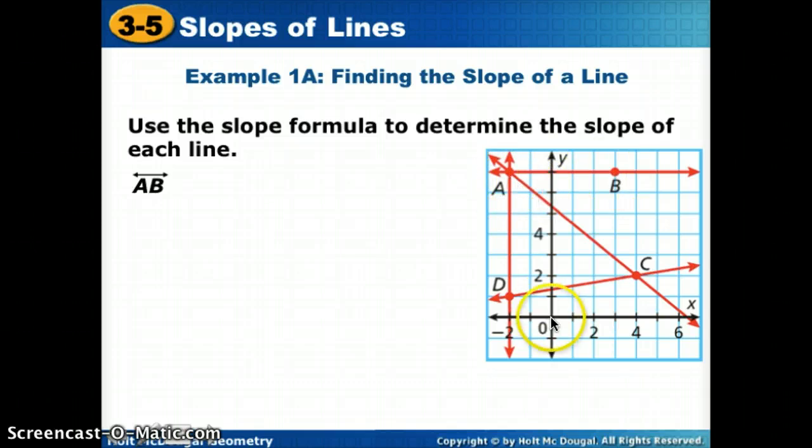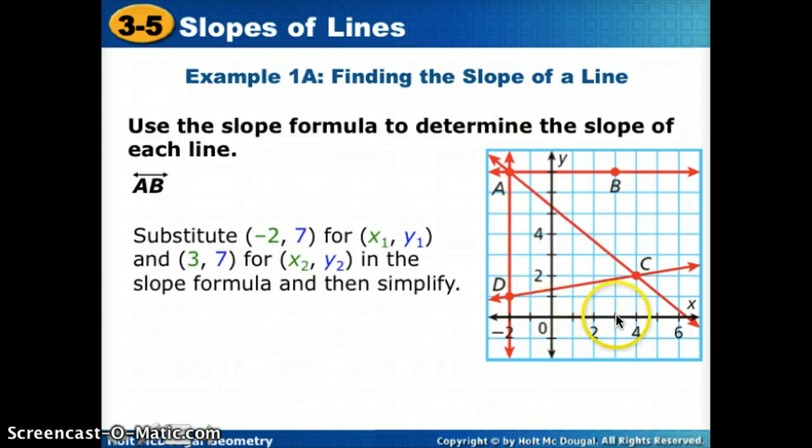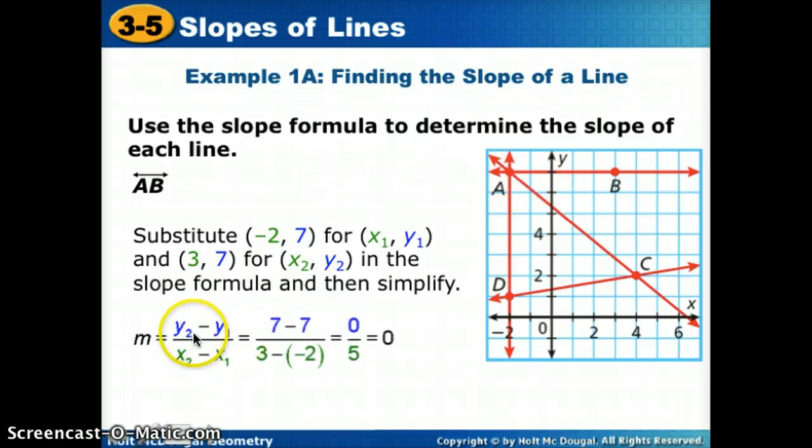If I look at A, if I started 0, 0, I had to go negative 2 for my x. And I went up 1, 2, 3, 4, 5, 6, 7. So negative 2, 7. And B will be at 3, 7. So if we substitute those in for our formula, we'd start with, I always start with writing the formula down when I'm not really sure how to use it yet. And then our first point will be A, our second point will be B.